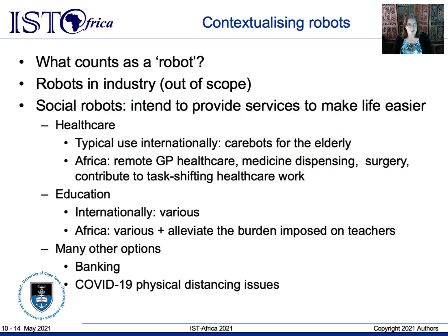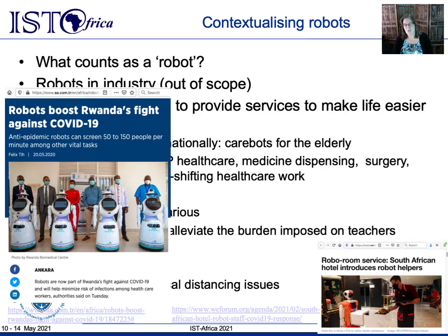Robots for physical distancing due to COVID borders on whether they might compete with humans for jobs, but that need not be the case. The robots in Rwanda, seen on the left of the slide, were acquired to protect a limited number of healthcare workers. The room service robots on the right are deployed for the last few meters only, serving travelers and patrons with mild COVID who are isolating in a specific hotel.